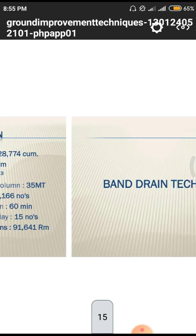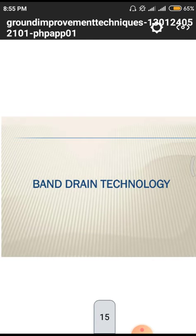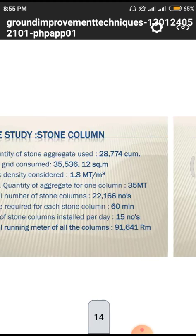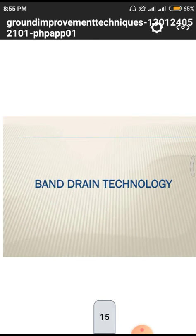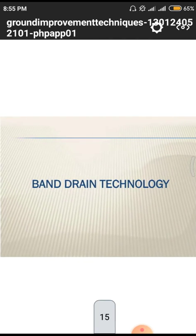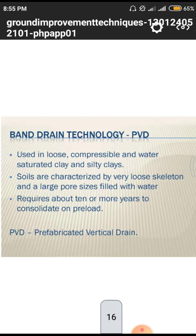The next topic is band drain technology — today's main topic. In previous classes I did not cover the case study for stone columns, so today's class covered that. Band drain technology is one method used for constructing vertical drains. These vertical drains or well-point systems directly decrease the water content in the soil. The shortcut term is PVD — Prefabricated Vertical Drain.